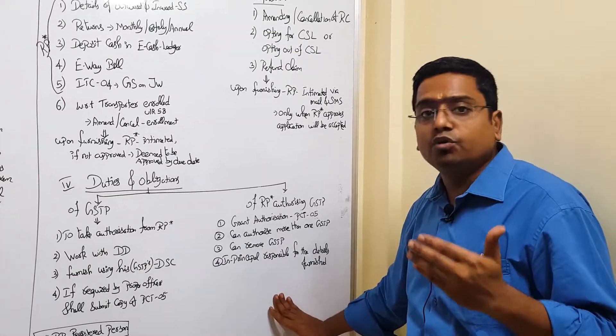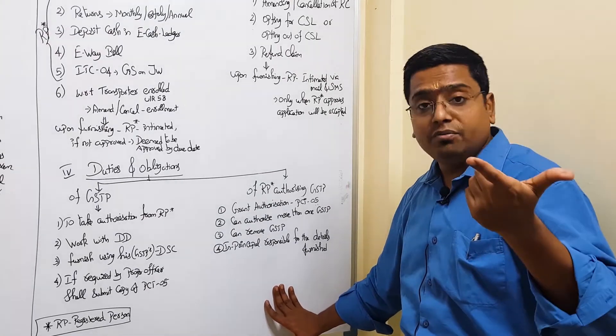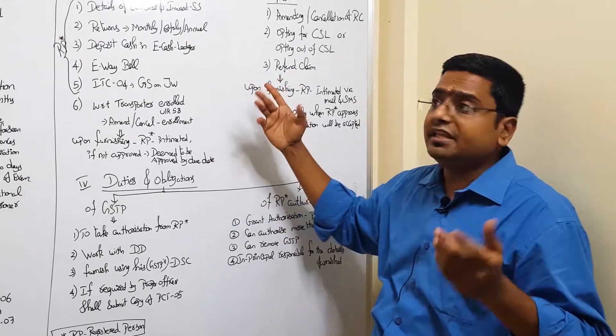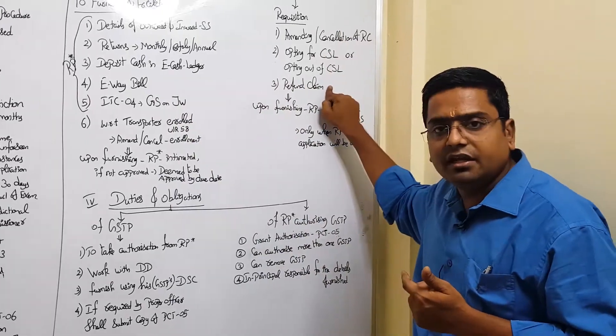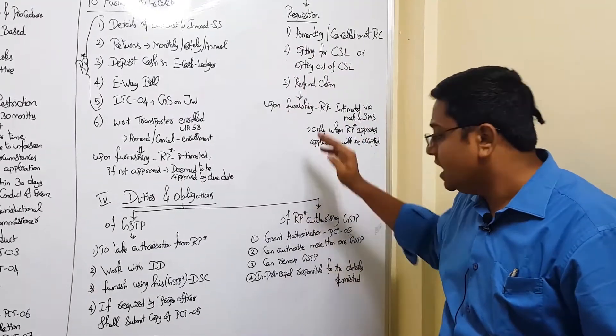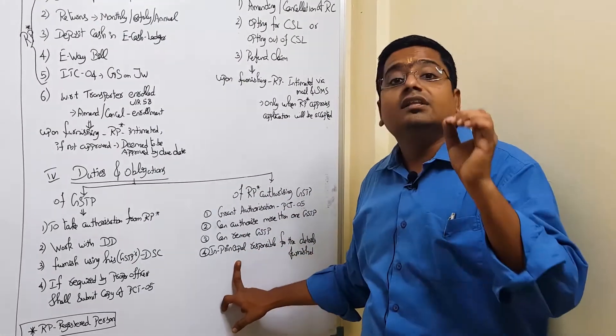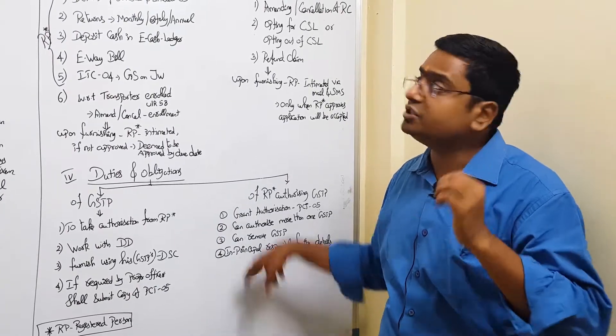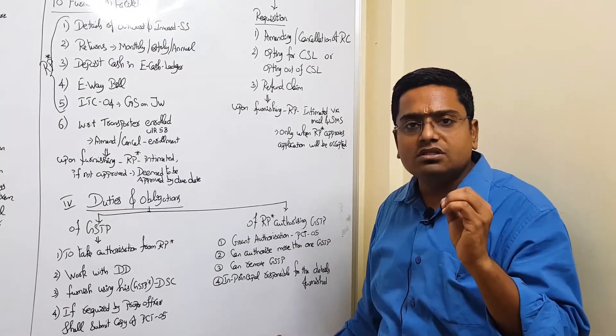With respect to registered person, what are the precautions, do's and don'ts? One: he has to authorize. He can appoint more than one person for the multiple functions listed here, meaning thereby one GSTP for furnishing this, one GSTP for e-waybill, one GSTP for refund claim. He can appoint any number of GSTPs for the specified services. And he can also remove the GSTP if he doesn't require.